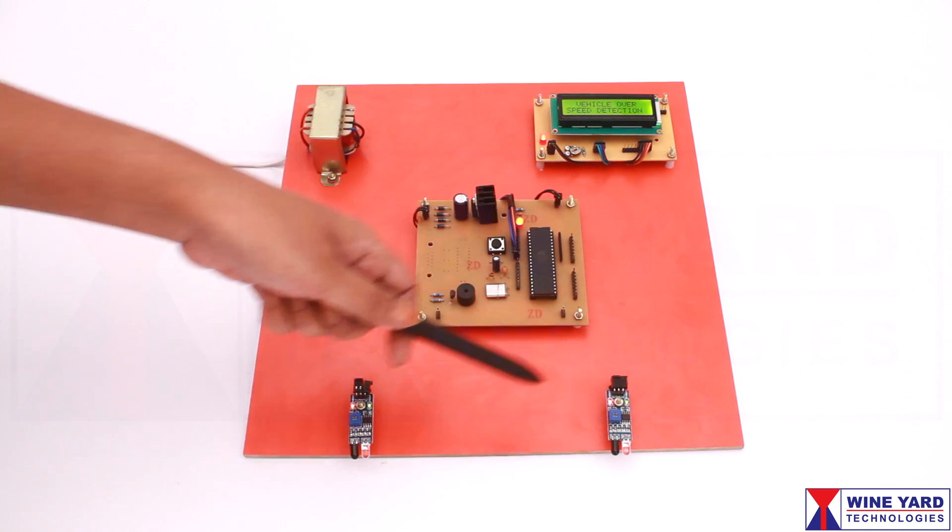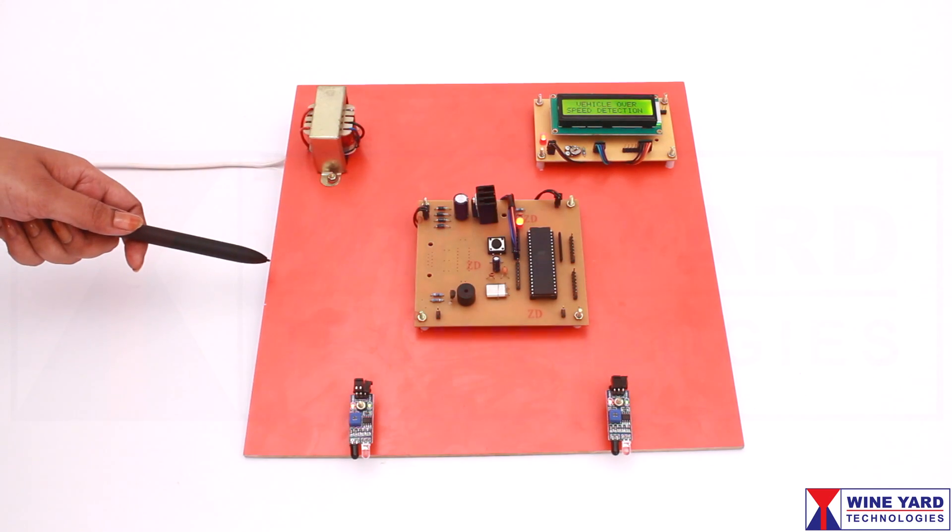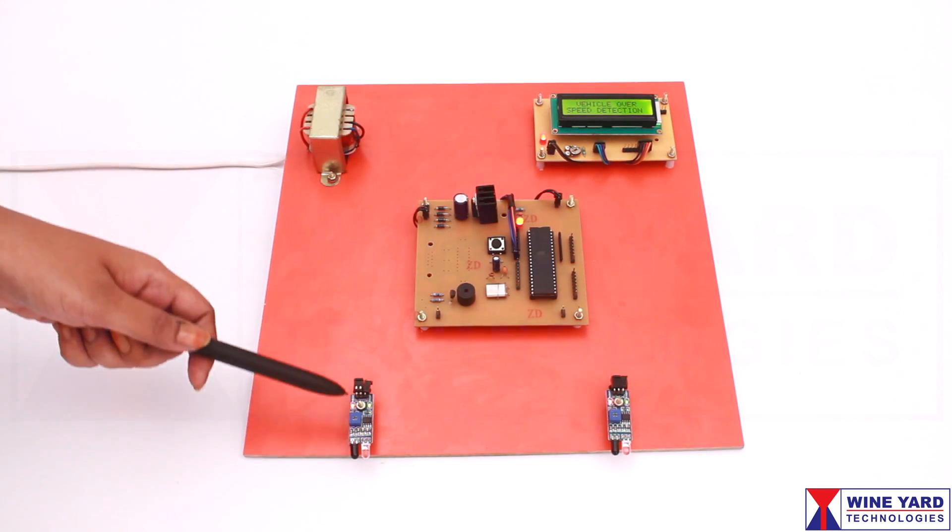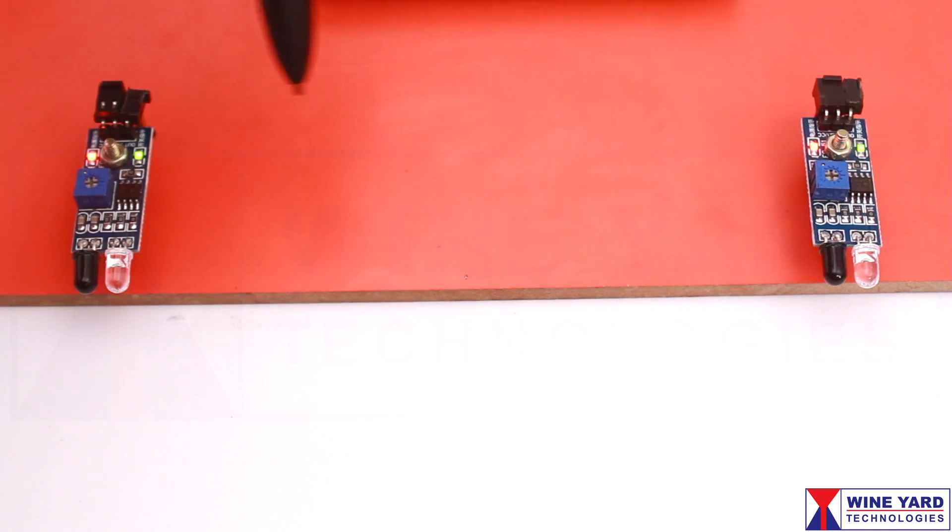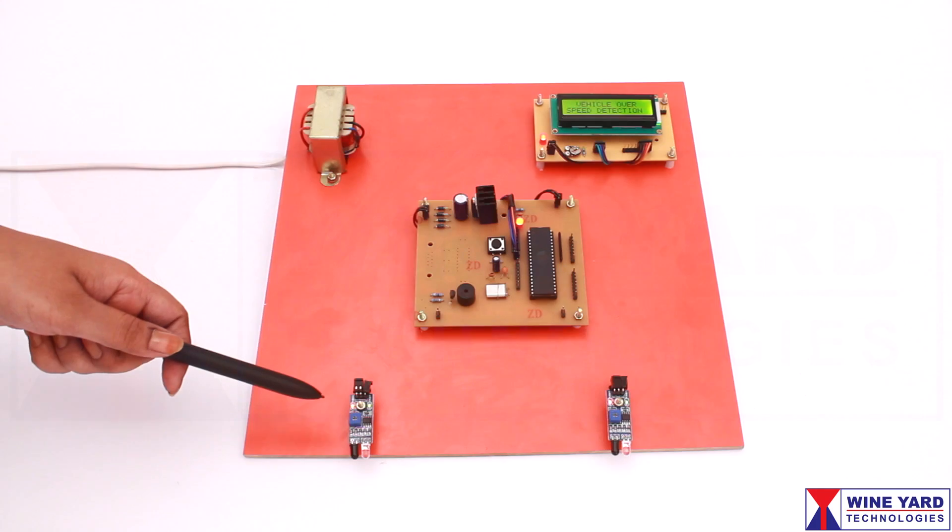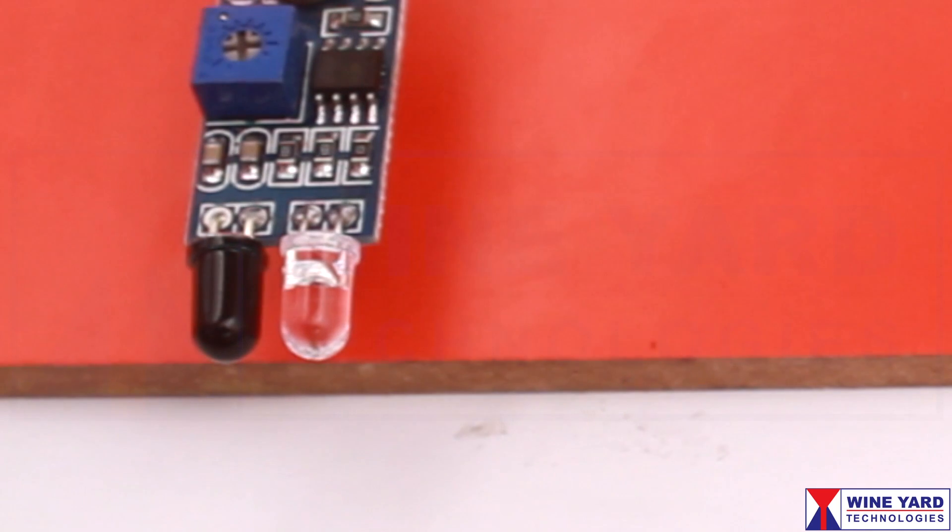This project is a Vehicle Overspeed Detection System for Highways. Here we are using two IR proximity sensors for speed detection. An IR LED and photodiode are connected here.